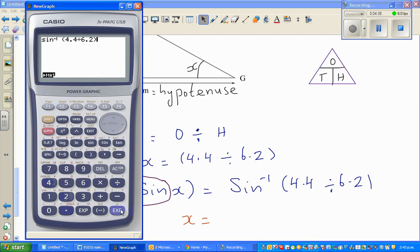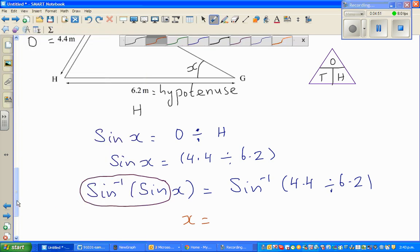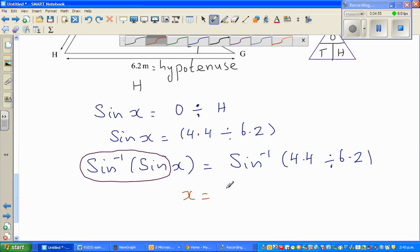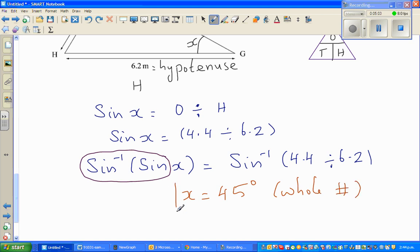Close the bracket, equal, that is 45 degrees in one decimal point. So I'll say this is 45.2 in one DP. If you want to write as a whole number, X is 45 degrees as a whole number. I'll round this to the whole number.